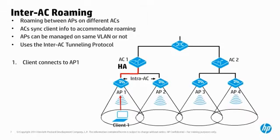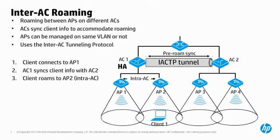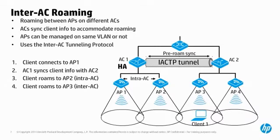AC1 proactively forms a special IACTP tunnel with AC2 to synchronize this information. As the client walks down the hall, the endpoint does an intra-AC roam to AP2 as previously described. Continuing to walk, the signal from AP2 weakens as AP3 strengthens. The client WNIC decides to disassociate from AP2 and reassociates with AP3. AP3 had client authentication info from AC1, so the client is not forced to re-authenticate, and a fast inter-AC roam association occurs.